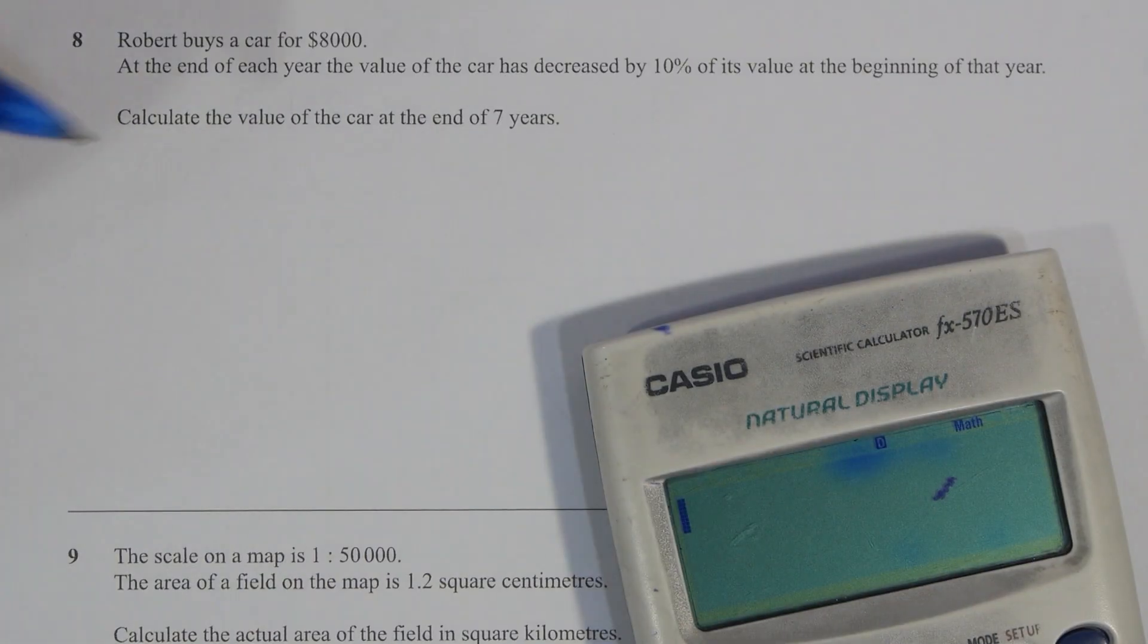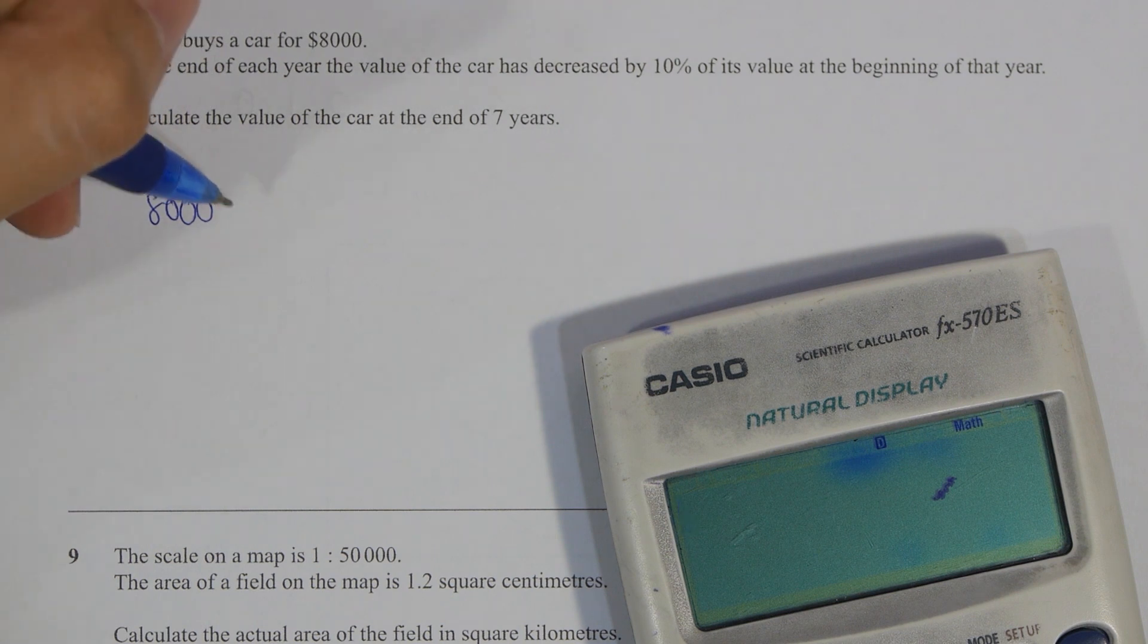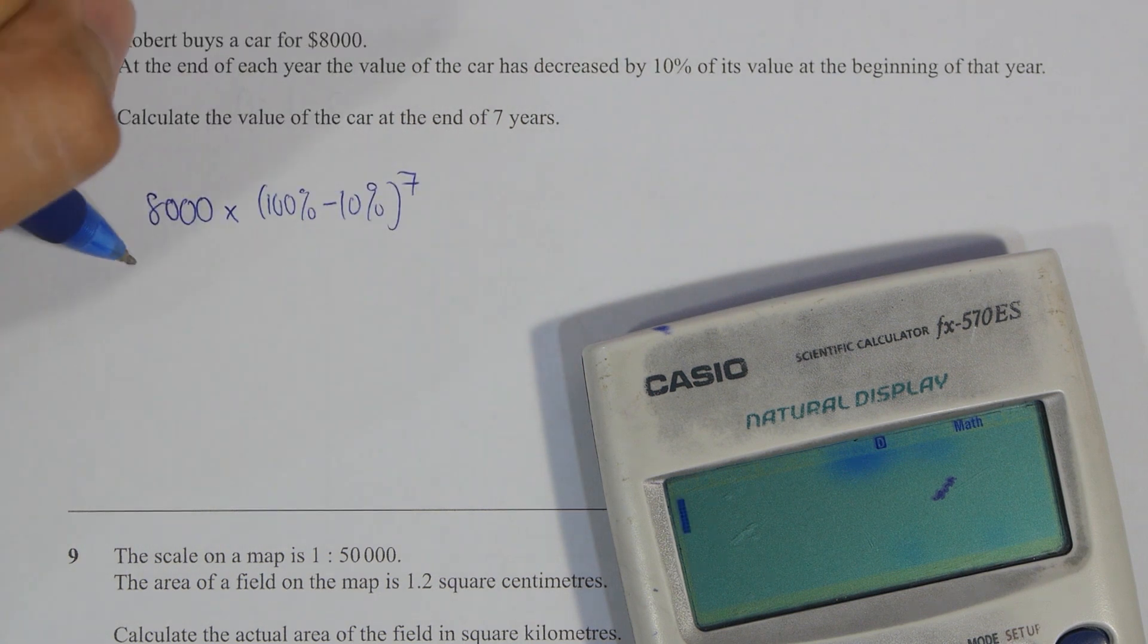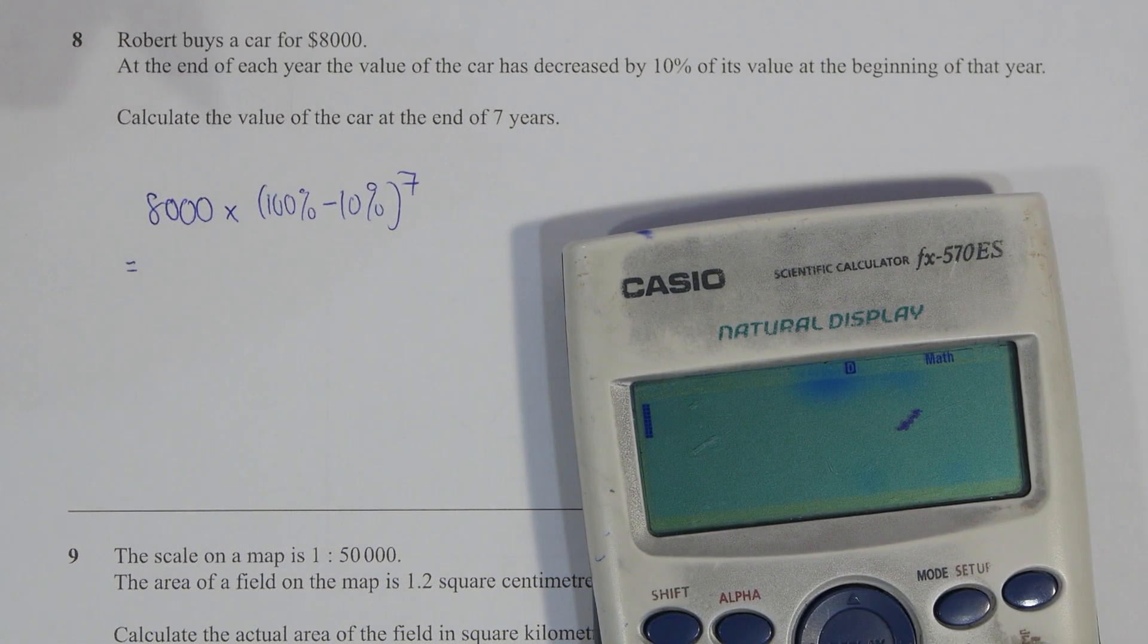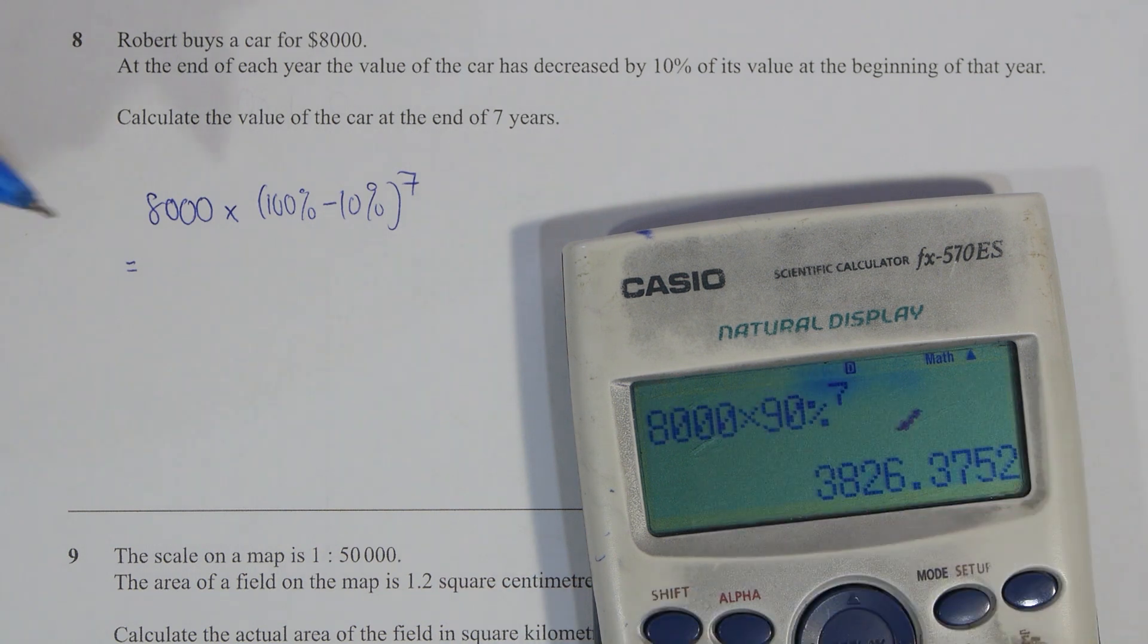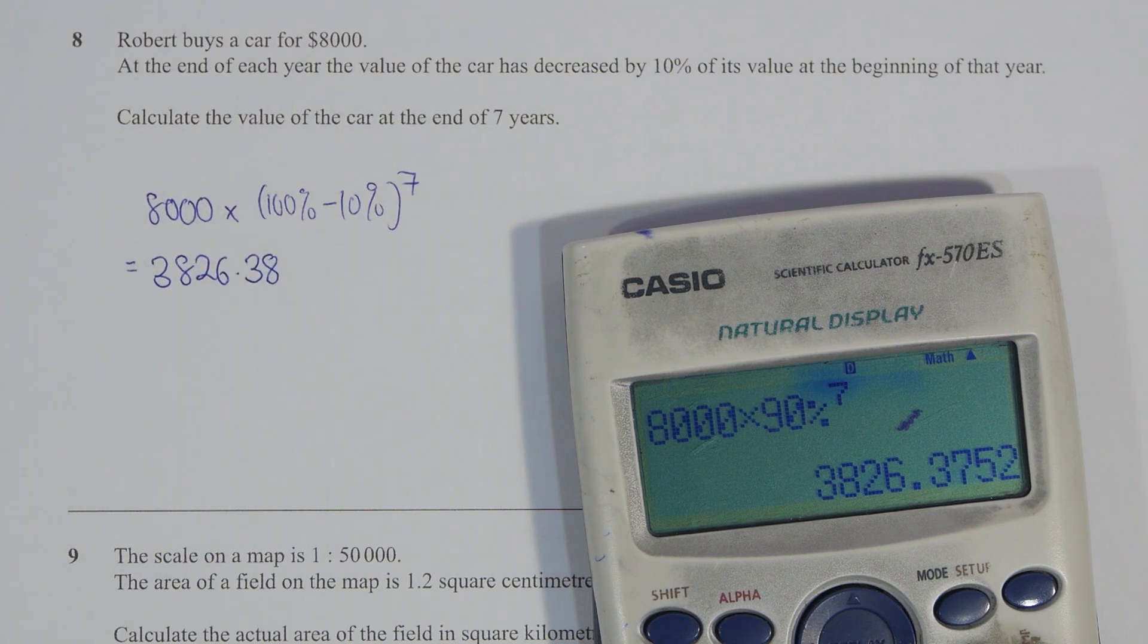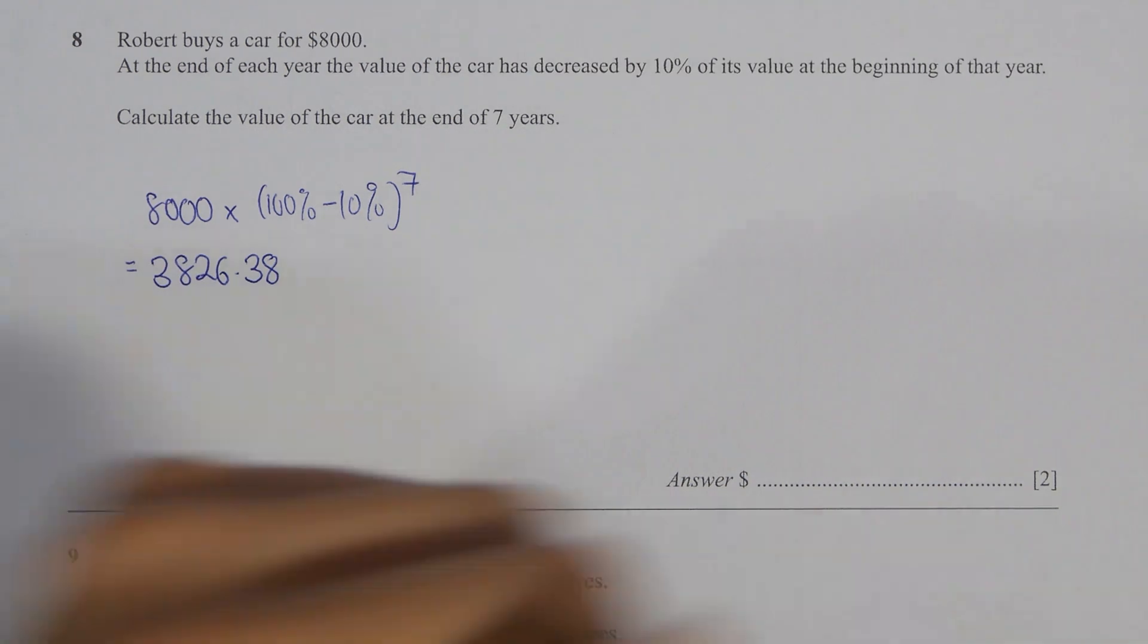Question 8, Robert buys a car for 8,000, and the car has a decreased value of 10% for 7 years. So this is actually compound. The formula goes by 8,000 times bracket 100% minus 10% to the power of 7. So the results will actually be 3,826.38.